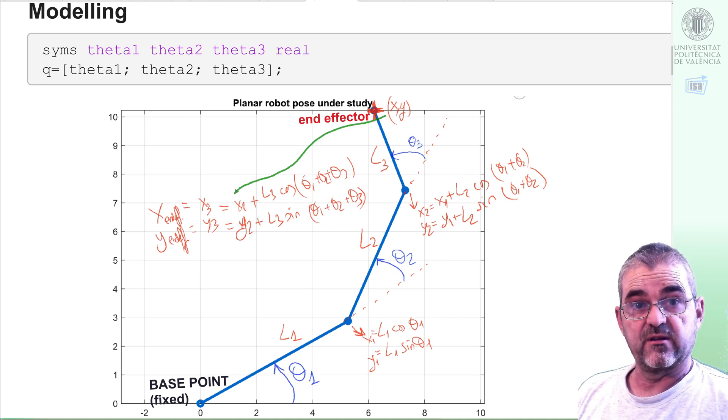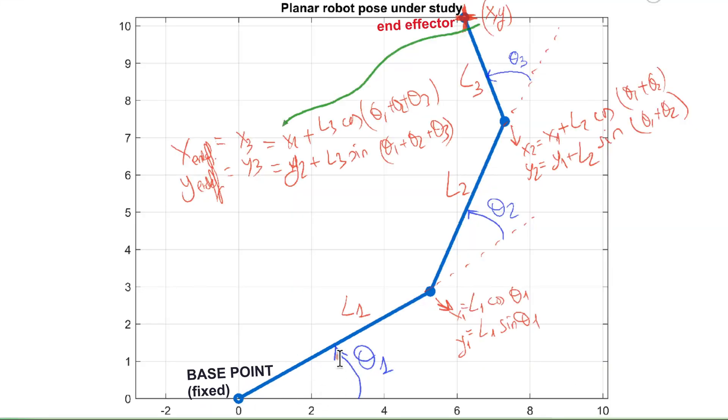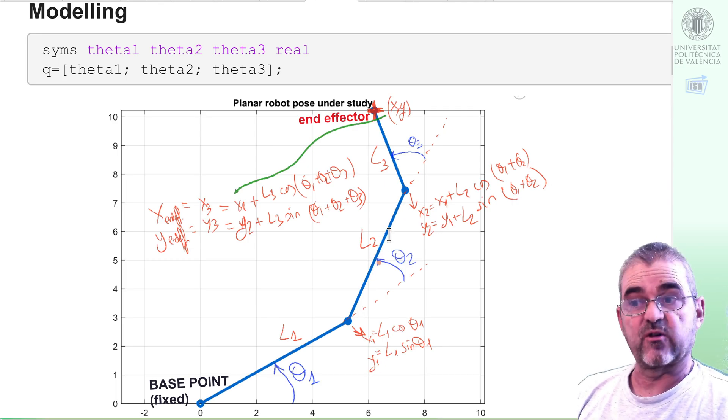Theta1, 2, and 3 will be this angle of the first articulation, the second articulation, and the third articulation. But the orientation in an absolute frame of the second bar will be theta1 plus theta2, and likewise the orientation in the absolute horizontal-vertical frame of the third element of the robot will be theta1 plus theta2 plus theta3.